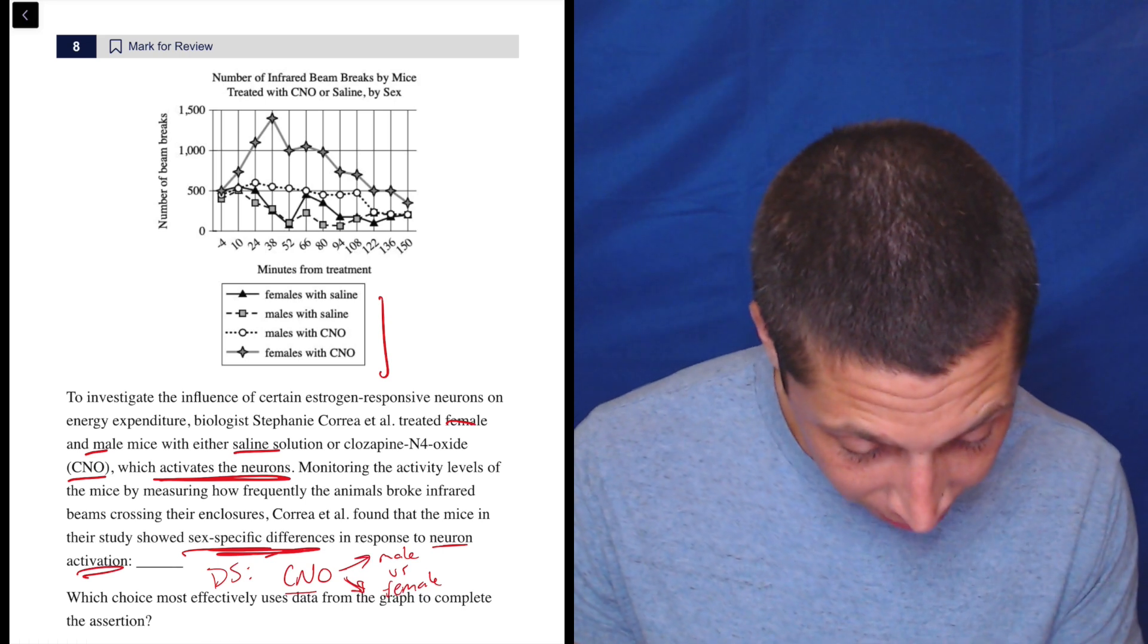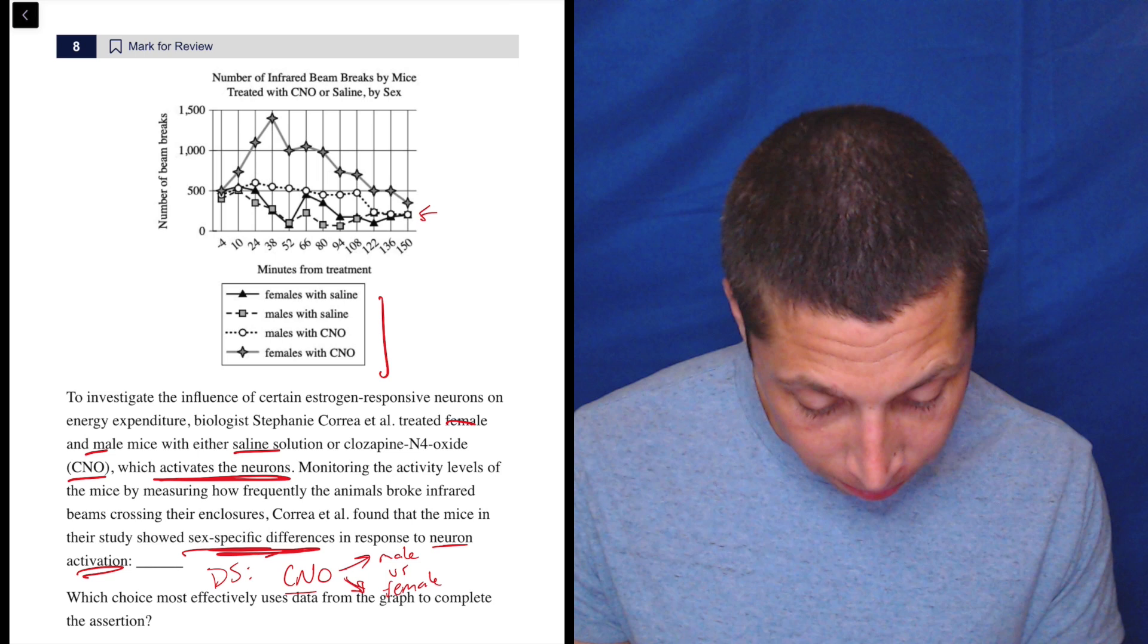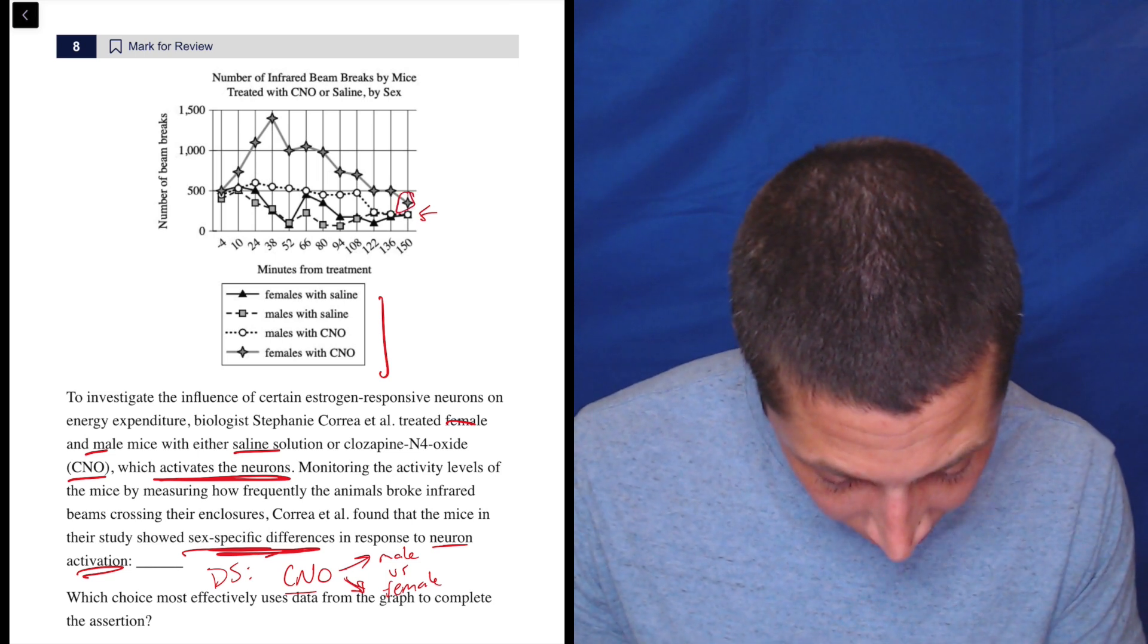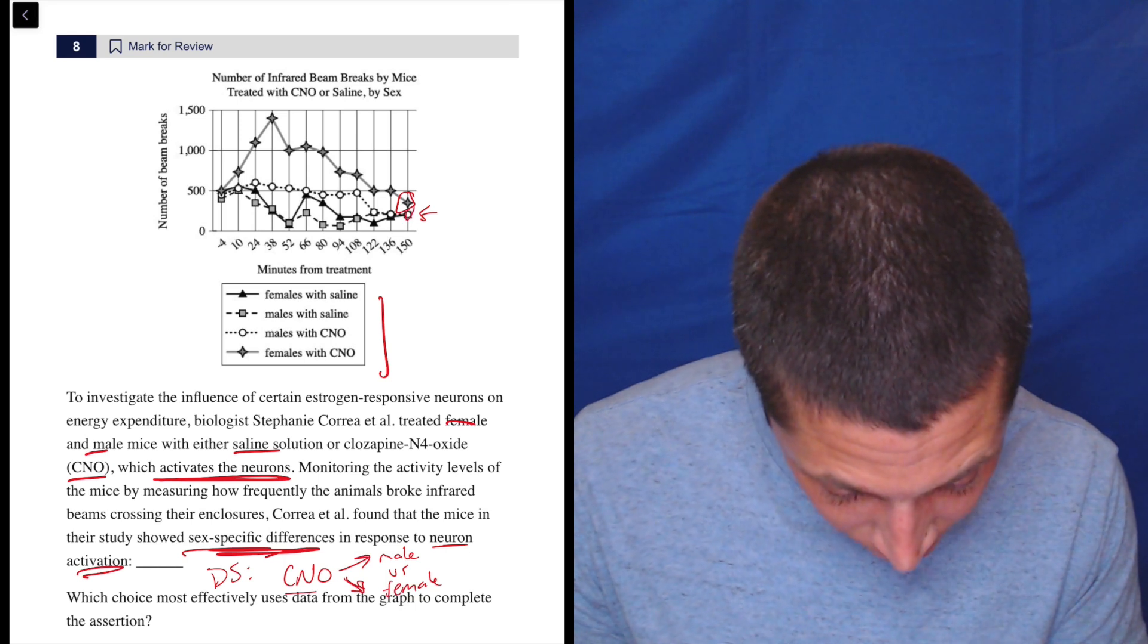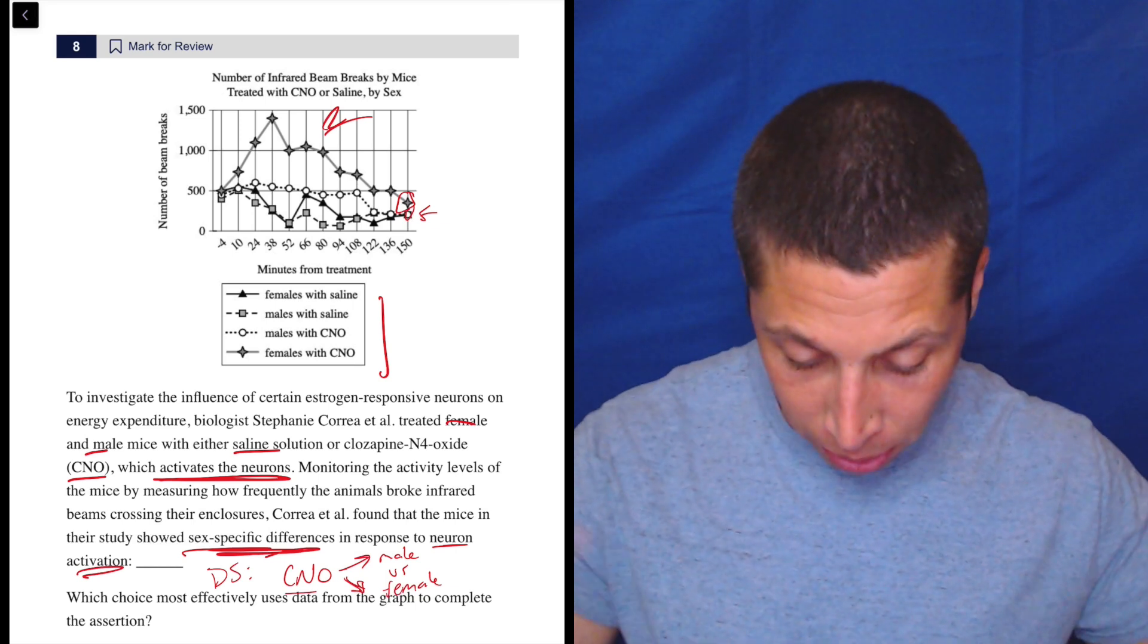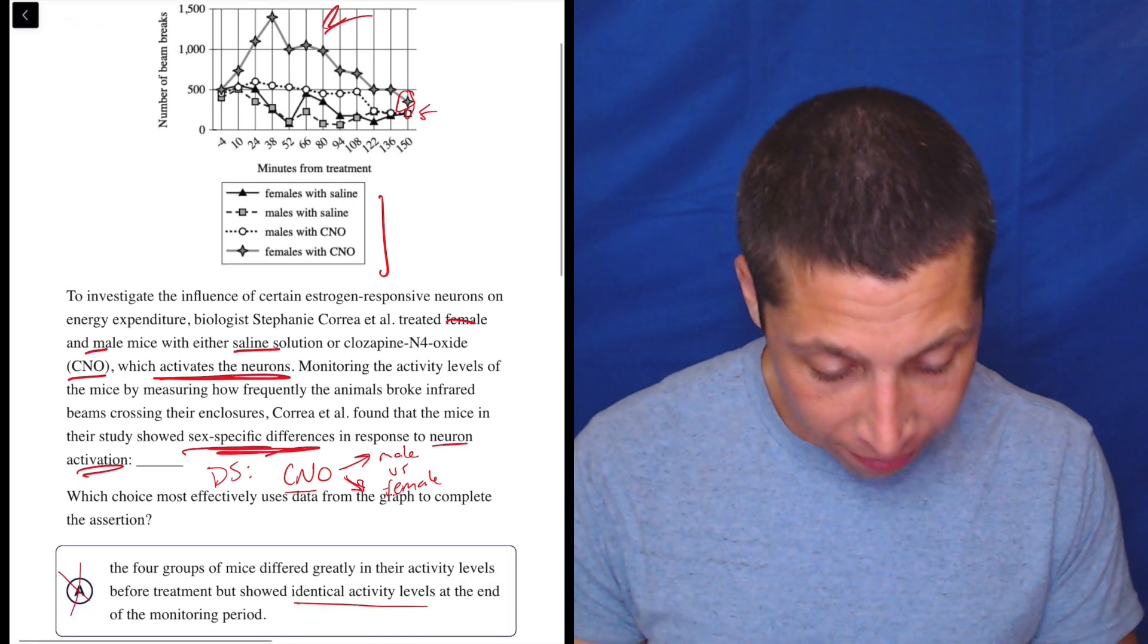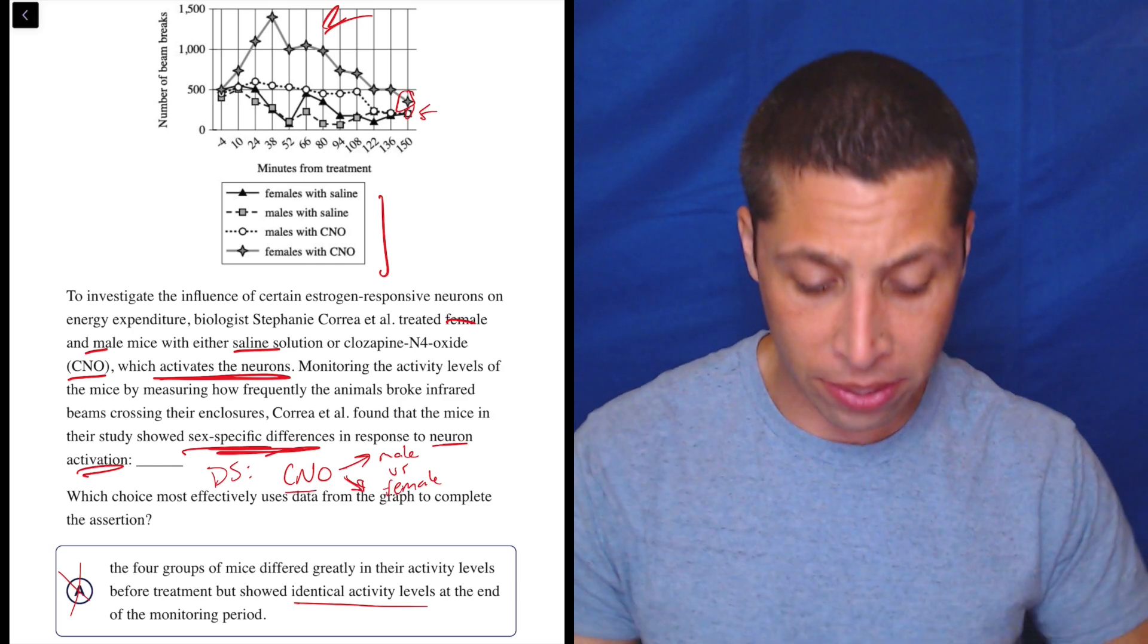So the females with saline are kind of down here buried. I can see that little triangle. Females with CNO is here. And males with CNO is the circle. So it does seem like the females are all going up here, doing all sorts of things. They're doing the beam breaks and whatever. So that seems to be true.